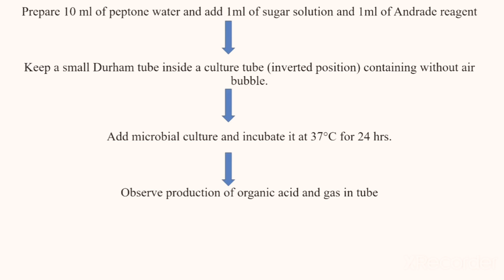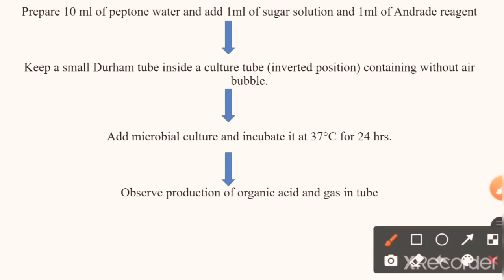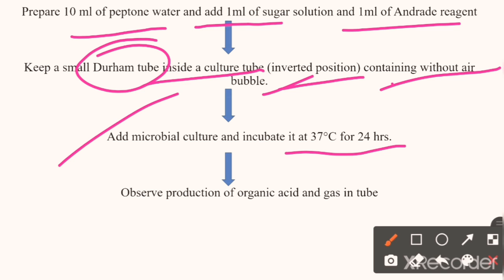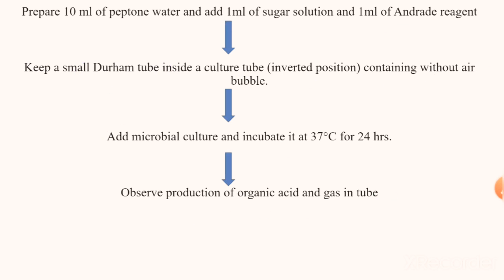For the procedure: first, prepare 10 ml of peptone water and add 1 ml of the desired sugar solution, then add 1 ml of Andrade's reagent. Keep one small Durham tube inside the culture tube in an inverted position containing no air bubbles. Then add microbial culture and incubate at 37 degrees for 24 hours. Finally, observe for acid production and gas production in the tube.